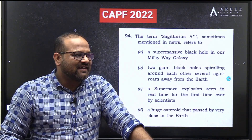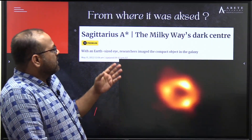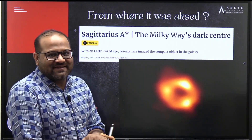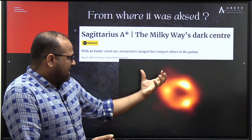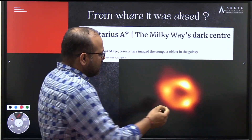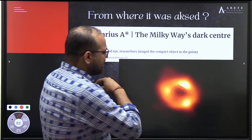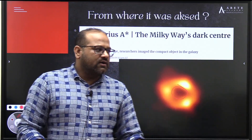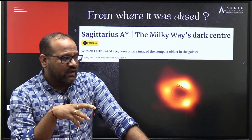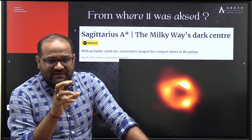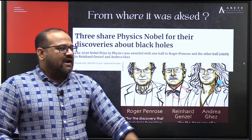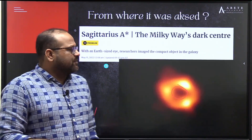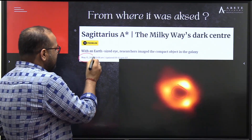The relevant news headline was 'Sagittarius A* - the Milky Way's dark center.' Researchers imaged this compact object at the center of our galaxy using an Earth-sized eye. What you see is the supermassive black hole at the center of our Milky Way galaxy. This news was published on May 15, 2022.